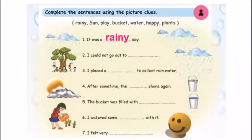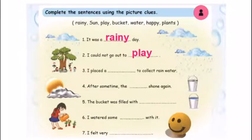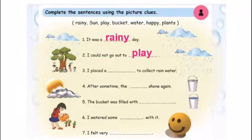Second one is: I could not go out to play. Third one is: I placed a bucket to collect rainwater. The word choices in the bracket are: rainy, sun, play, bucket, water, happy, plants. Looking at the picture, the answer is bucket. So, I placed a bucket to collect rainwater.